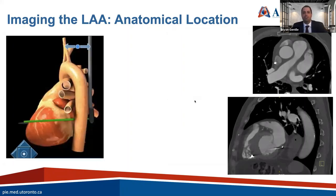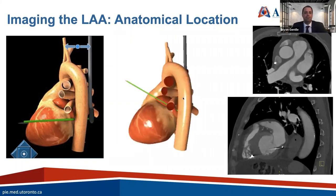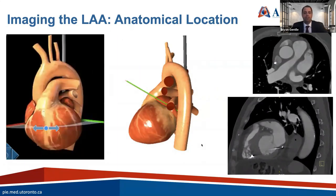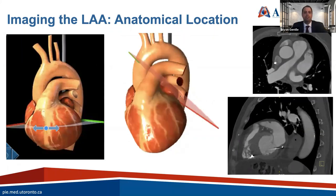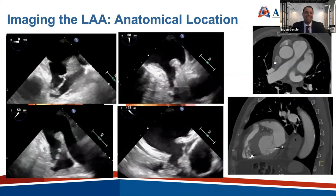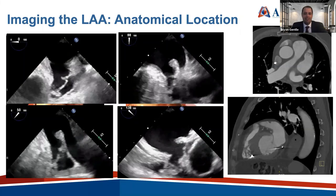For imaging the left atrial appendage, our traditional mid-esophageal four-chamber view is challenging. We need to move our TEE probe to a higher esophageal orientation and provide plenty of anteflexion to deliver the ultrasound beam through the body of the appendage. The left atrial appendage is also rotated within the heart, so we must turn our crystal array to a high angle view — about 130–135 degrees — to visualize the full body of the appendage.